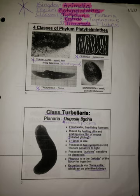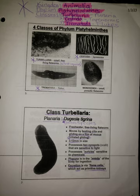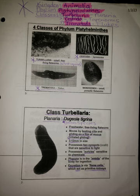Class Turbellaria — planaria, also known as Dugesia tigrina — is the genus species. They are a freshwater, free-living flatworm. They move by beating cilia and gliding on a film of mucus, called ciliated gliding. They are 3 to 12 millimeters in size. They possess two eye spots, or ocelli, that are sensitive to light, and auricles sensitive to chemicals. The pharynx is in the middle of the body for ingestion, and excretion is via flame cells, which act as primitive kidneys.